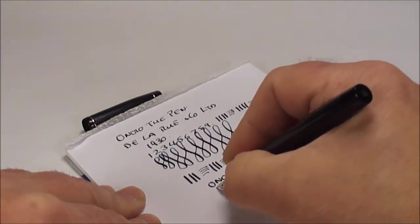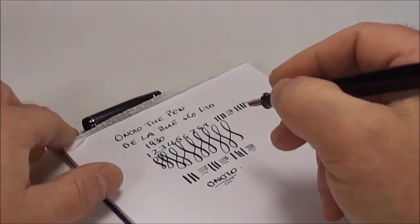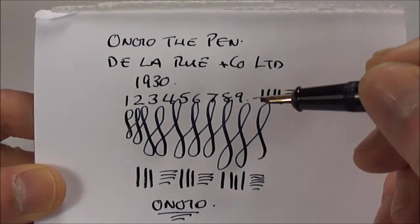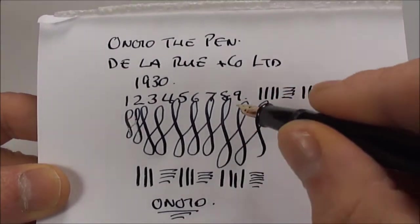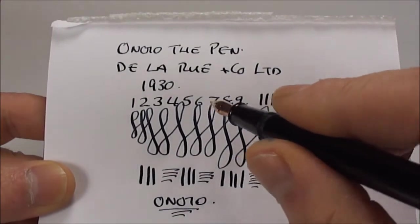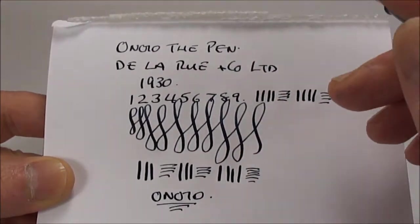So, there we have it. The Onoto. A very nice writer. Some flexibility in the nib. As you can see there, we're getting a nice little variation in the line. And the lovely thing about it, it's a lovely writer.